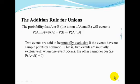Recall that the probability that A or B will occur is the probability of A union B. The addition rule for unions says that the probability of A union B is equal to the probability of A plus the probability of B minus the probability of A intersect B.